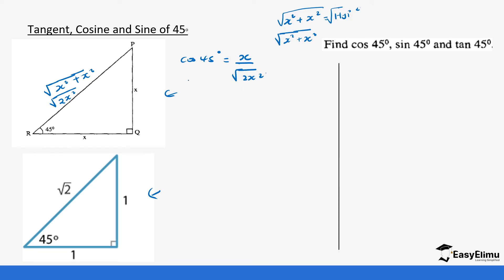Sine 45 is going to be the opposite — which is x — over the square root of 2x squared as well. And then tan 45 is opposite over adjacent — which is x over x — which gives us 1.